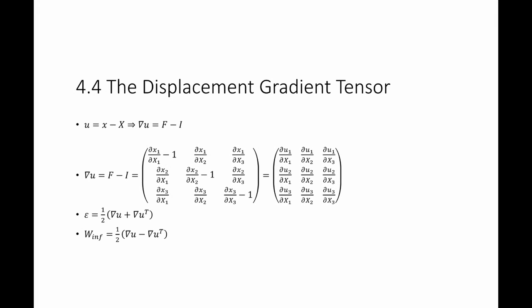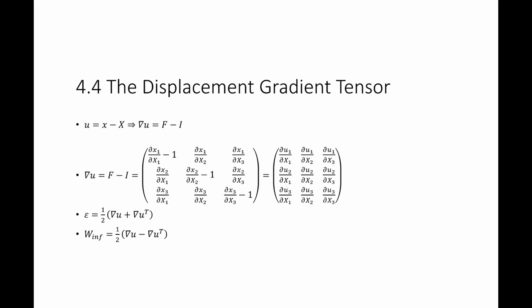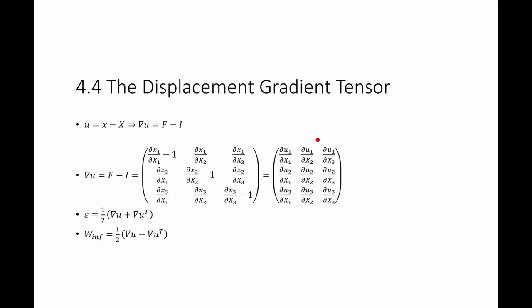We will cover many examples in class. For the calculations: the displacement u equals the new position minus the old position; the gradient of u equals F minus I; F equals partial small x by partial capital X; and I is the identity matrix arising from partial X by partial X. To calculate the gradient of u, you can either compute F and subtract I, or directly compute the partial derivatives of displacement components. Epsilon is half the gradient of u plus its transpose, and the infinitesimal rotation tensor w is half the gradient of u minus its transpose.